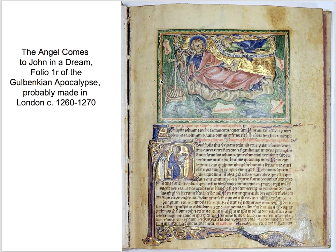We're looking at the Gulbenkian Apocalypse, housed in the Gulbenkian Museum in Lisbon, Portugal, probably made in London during the 1260s. This is the first page of the manuscript — just a book — written on vellum or parchment, which is animal skin that has been cleaned, scraped, and dried under tension. Instead of being tanned into leather, it is made into parchment by chalking, giving it a more white and pleasant surface.